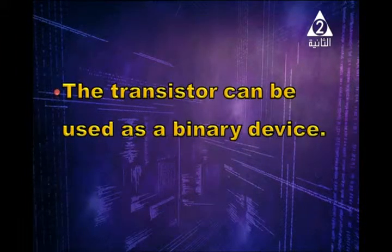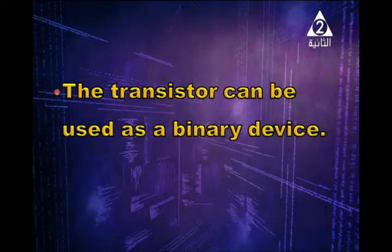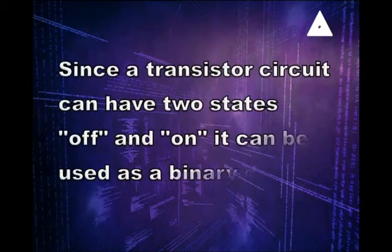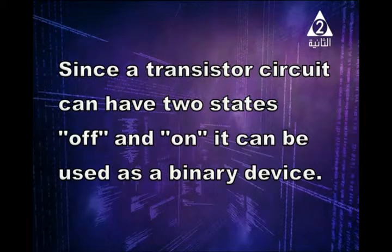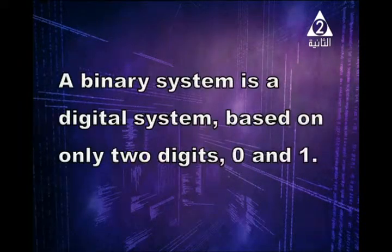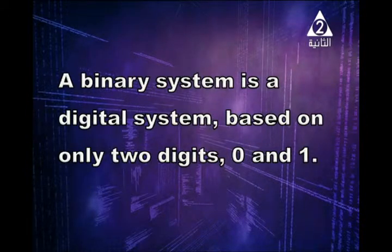A transistor can be used as a binary device because a transistor circuit can have two states: on and off. A binary device is a digital system based on only two digits — zero and one.